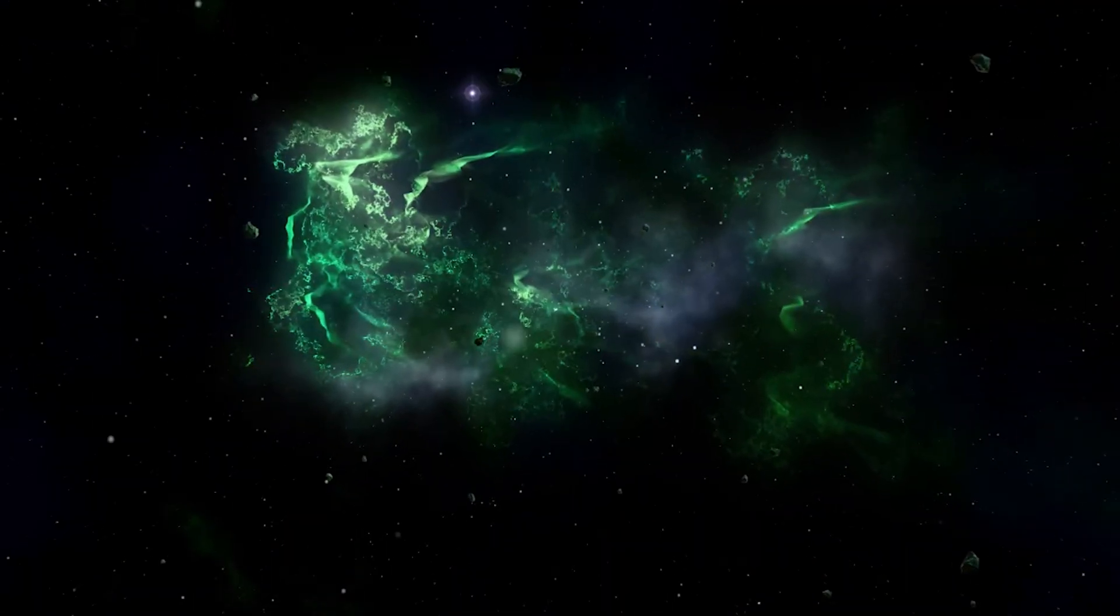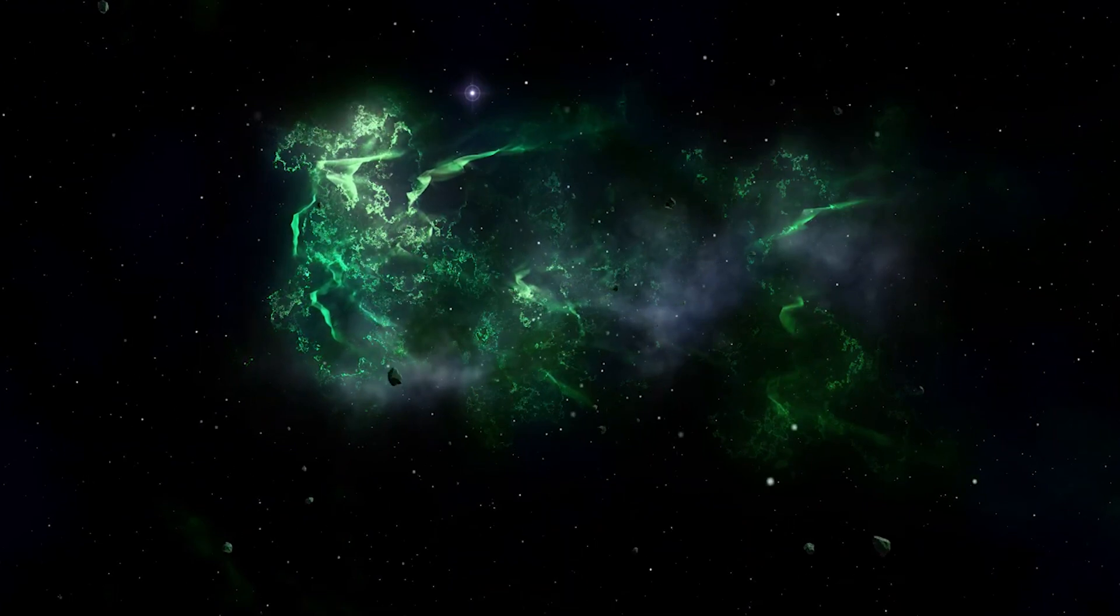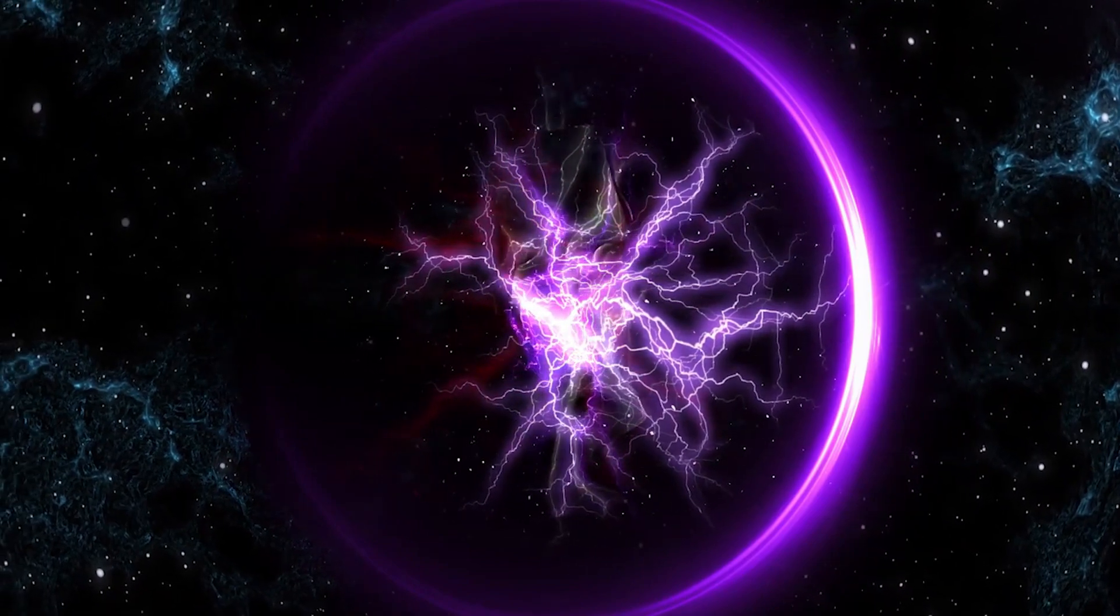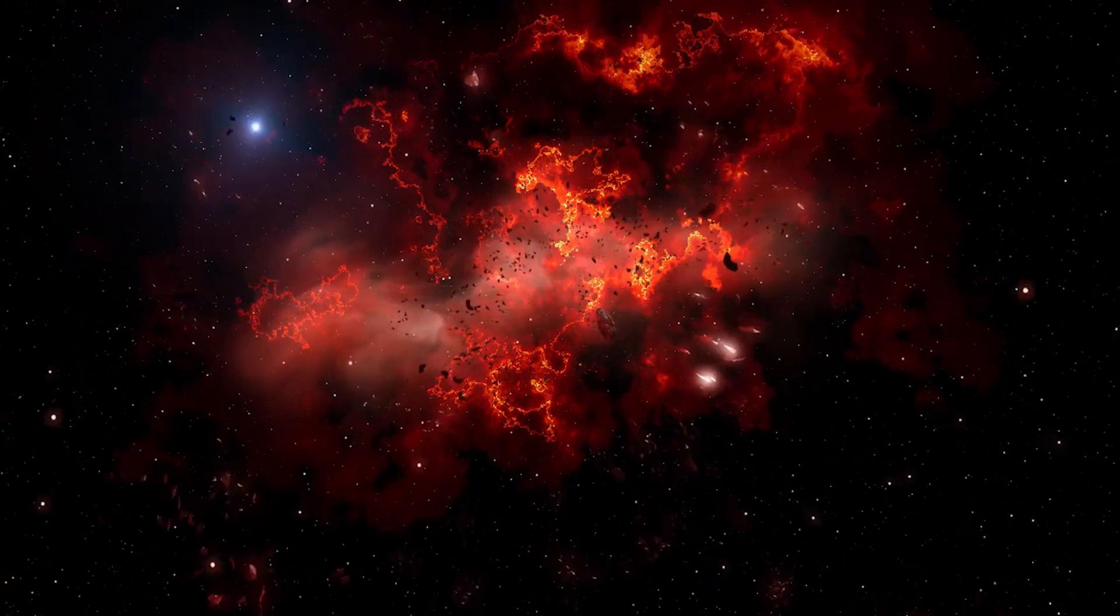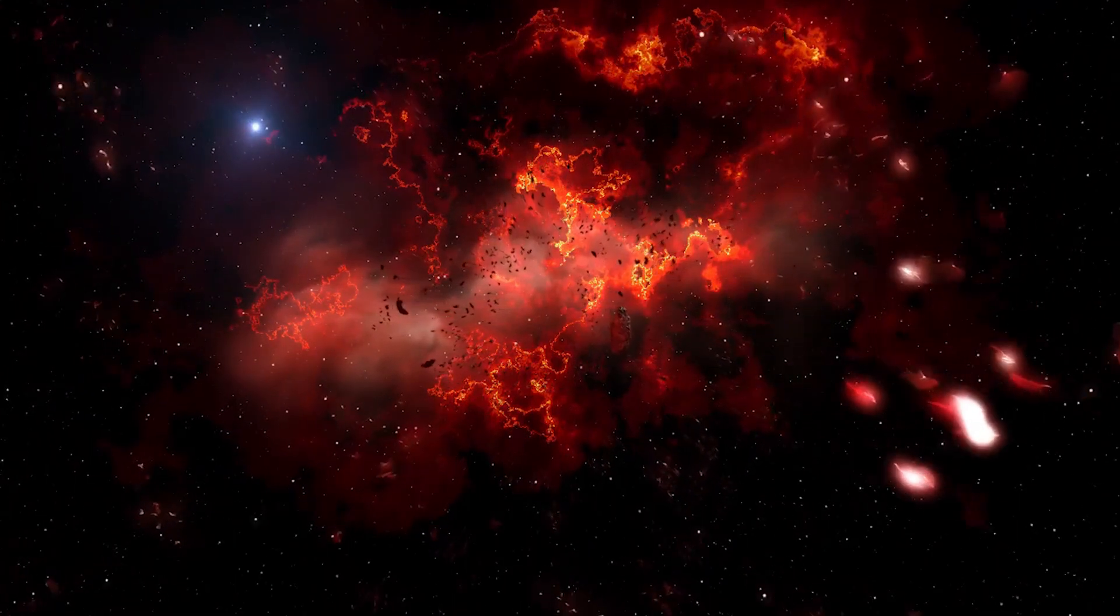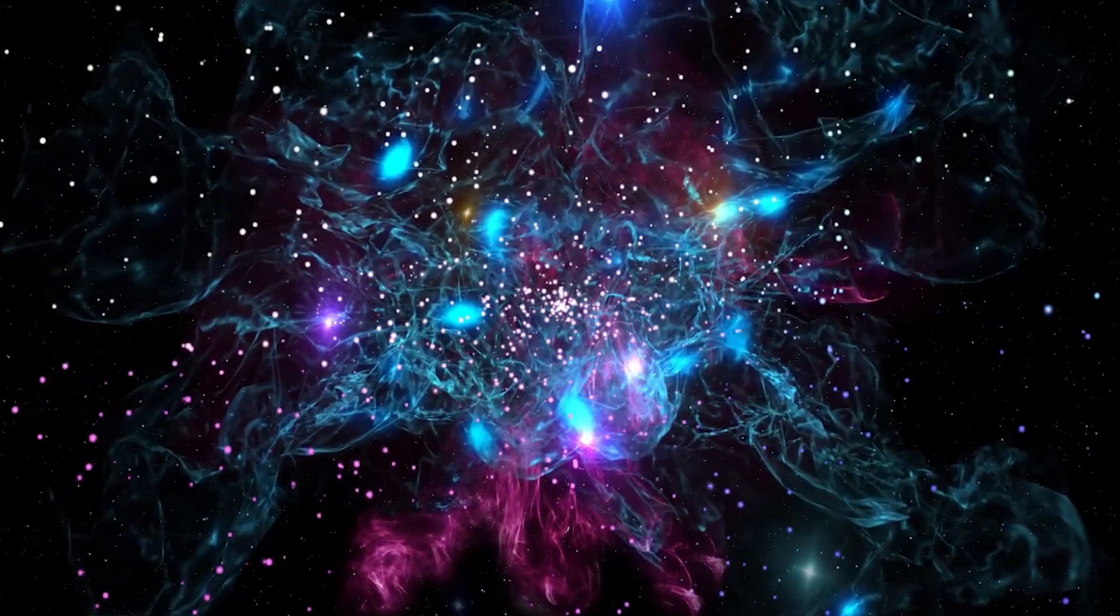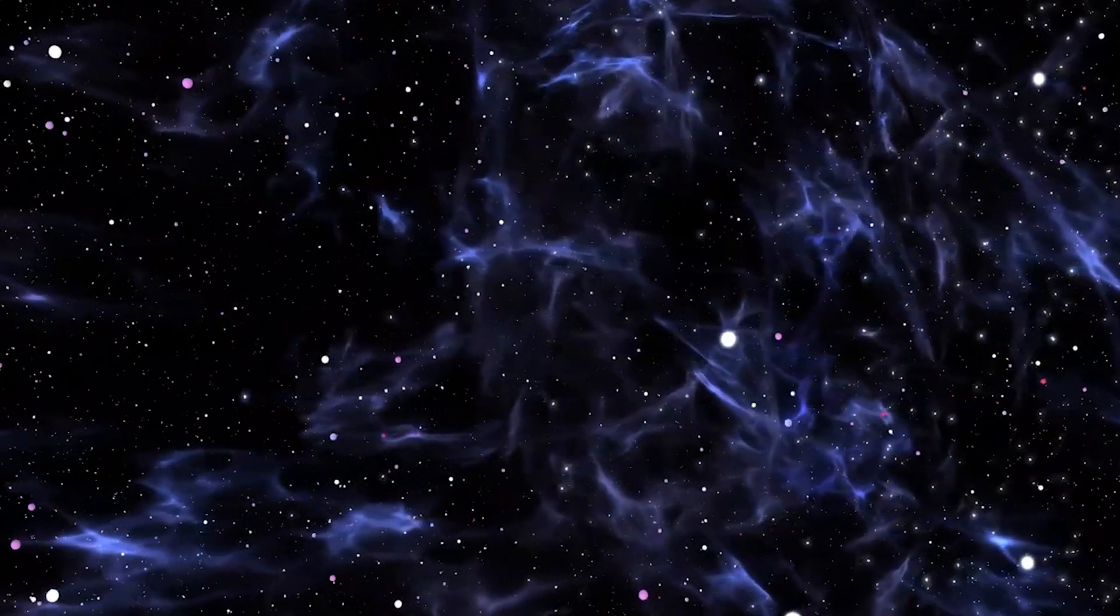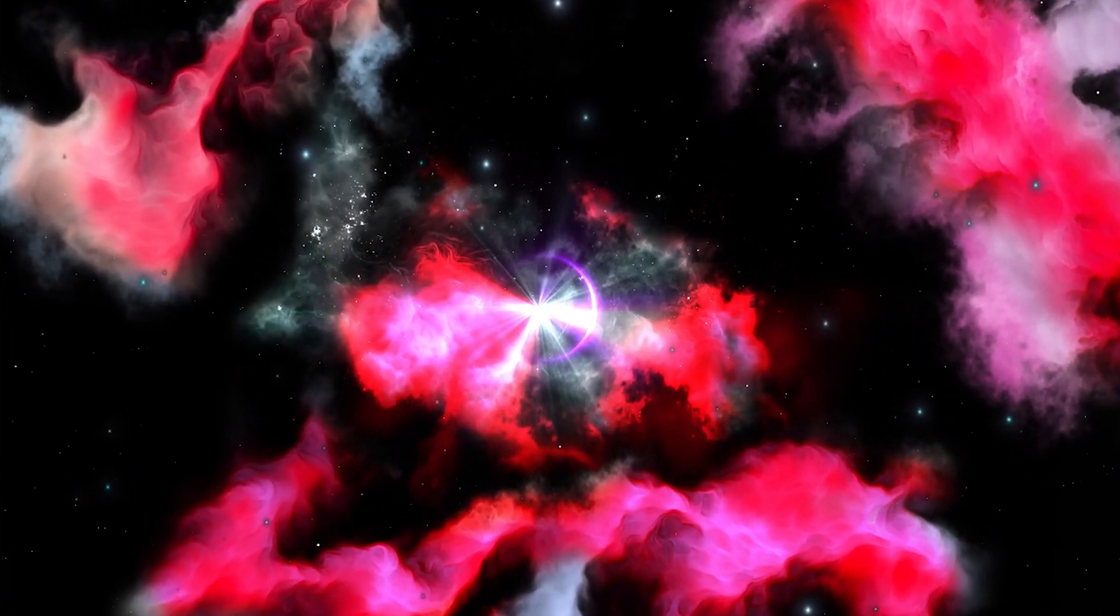Thousands of galaxies, including the faintest objects ever observed in the infrared, have appeared in Webb's view for the first time. This slice of the vast universe is approximately the size of a grain of sand held at arm's length by someone on the ground. The combined mass of this galaxy cluster acts as a gravitational lens, magnifying much more distant galaxies behind it. Webb's NIRCam has brought those distant galaxies into sharp focus.